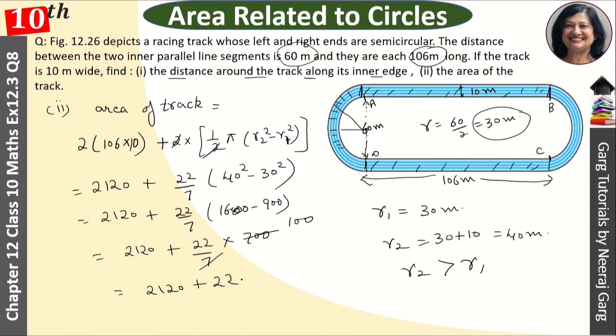And this is our 2120 plus 2200. After plus, what have we got? This is our 4320 meter square. This is our area of the track. This is our answer. I hope you understood the question.